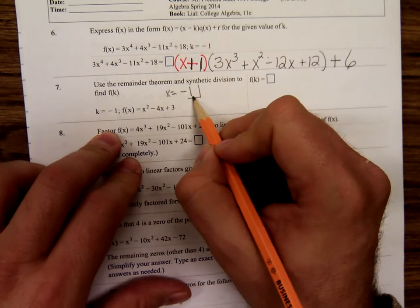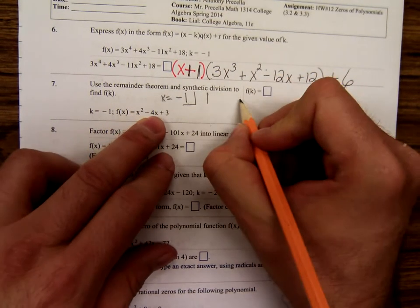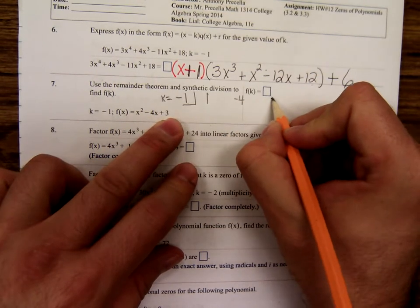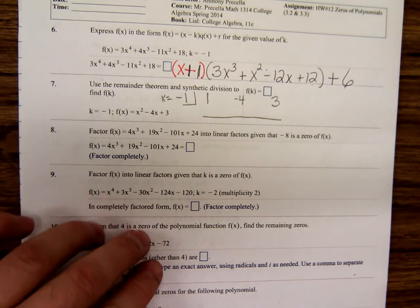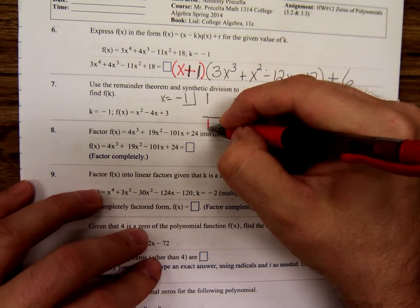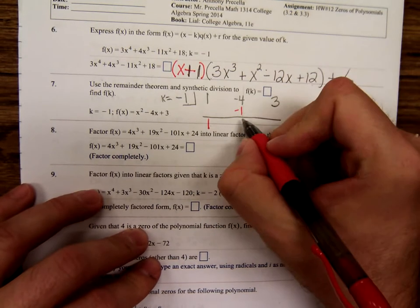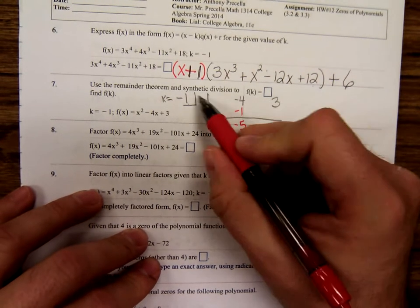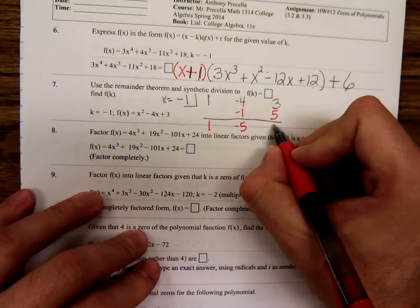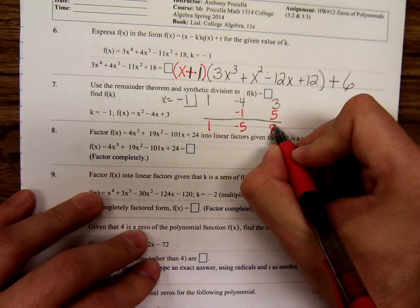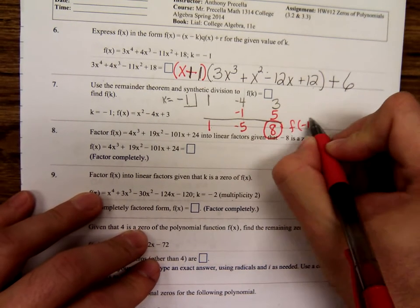If we put k inside here, you write the coefficients, one, negative four, three, and then let's see. Carry down the one. One times negative one, negative one. Negative four plus a negative one, negative five. Negative five times negative one is five. Adding those, we get an eight. The remainder theorem says that this is f of negative one.